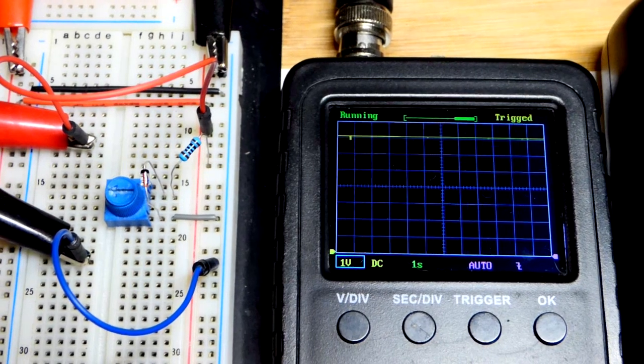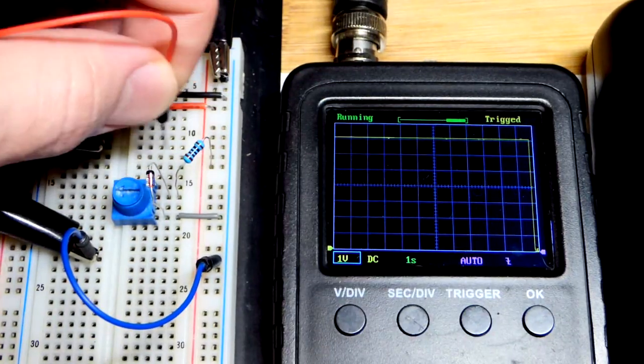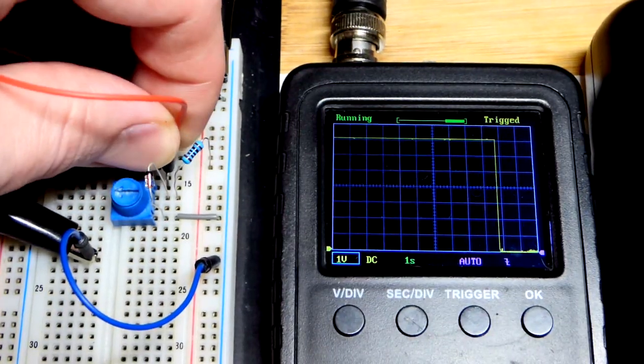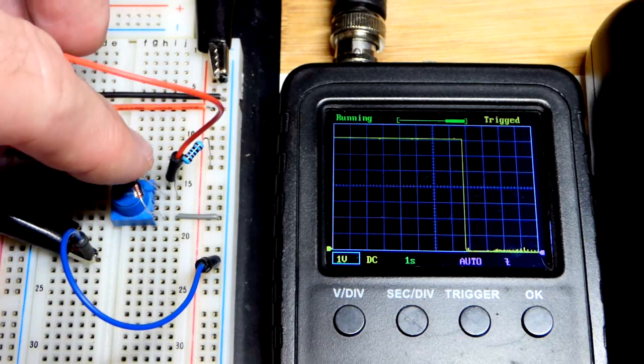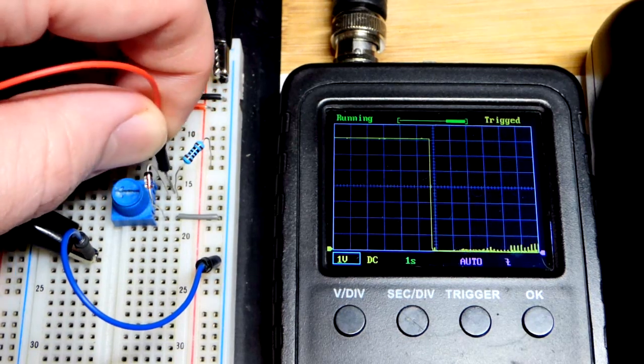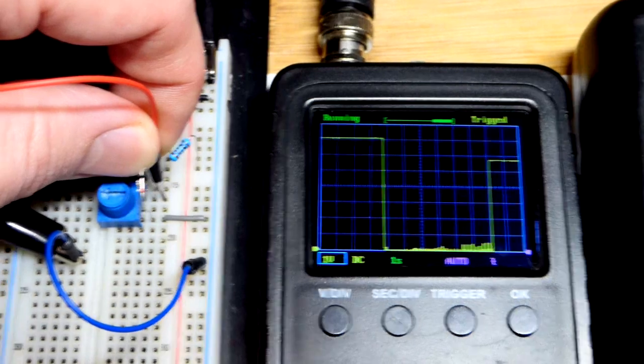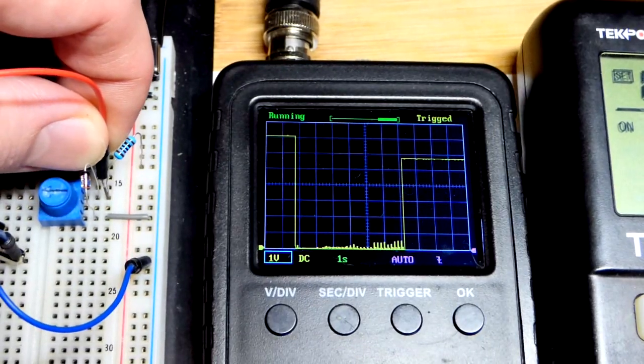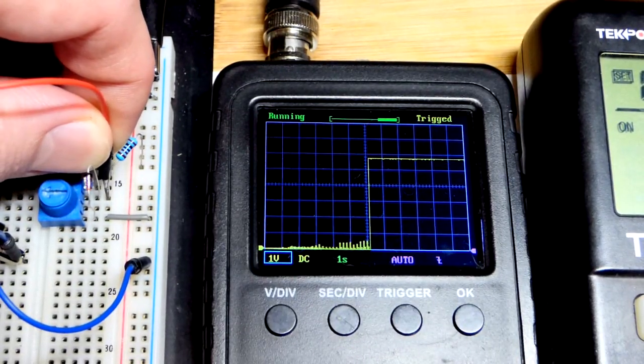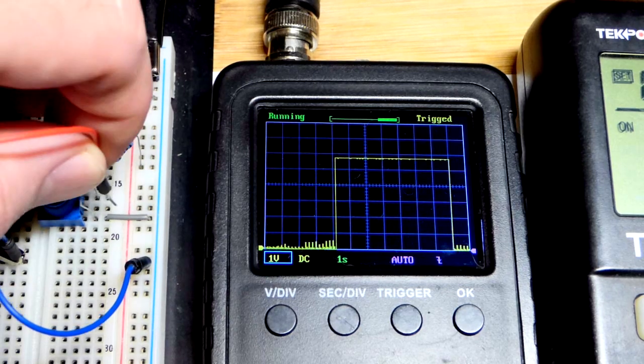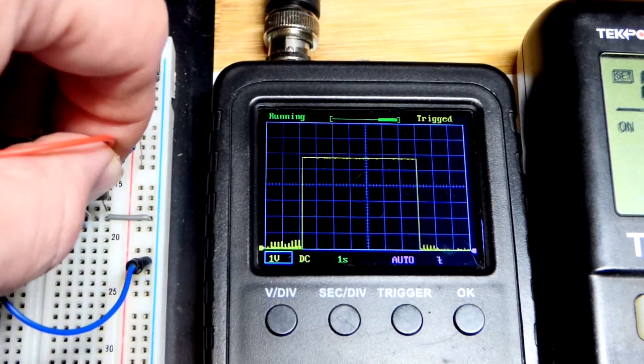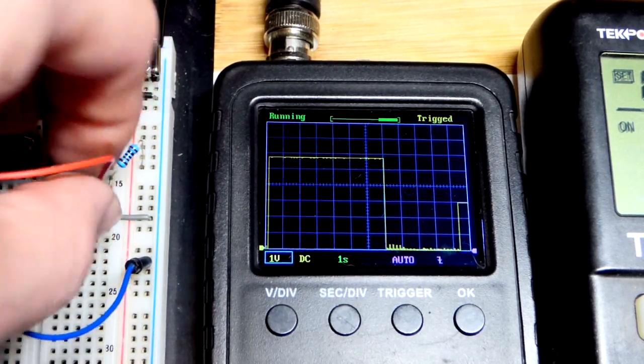Now we will take a look at the voltage where the Zener diode, I'm actually up one spot, the Zener diode and the resistor connect. There you can see we got about 5.6 volts right there where the Zener diode is up five and a little more than half of a square. So I think it's actually closer to 5.7. But there we go.